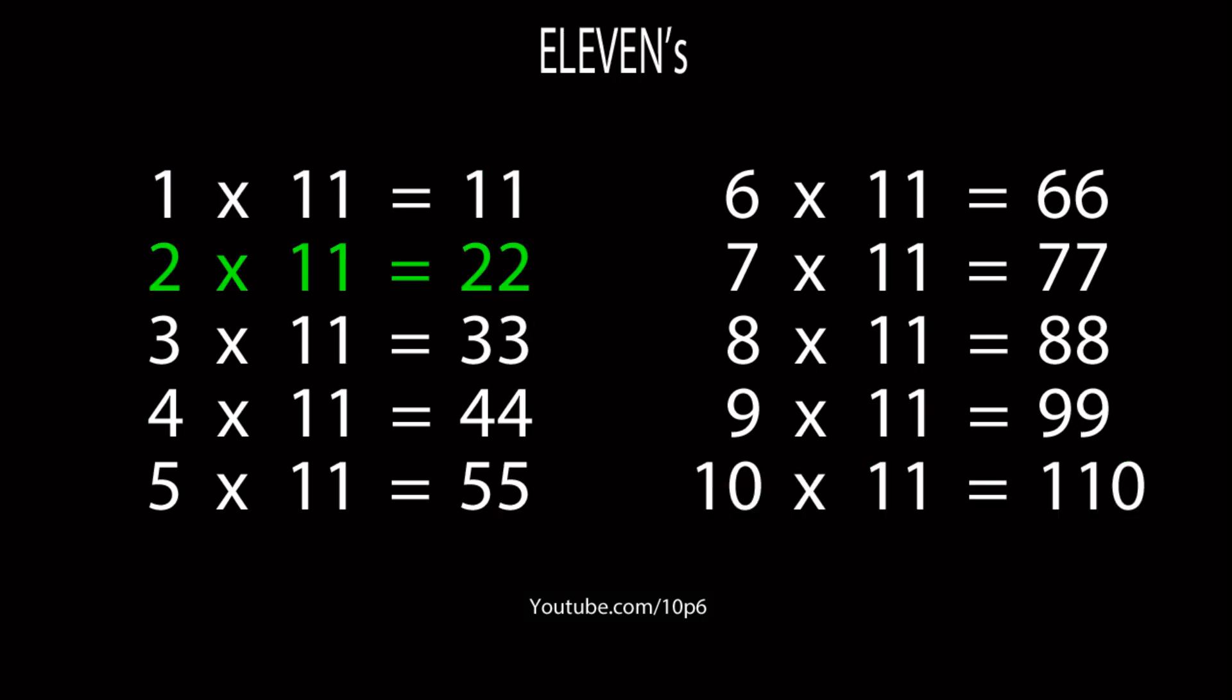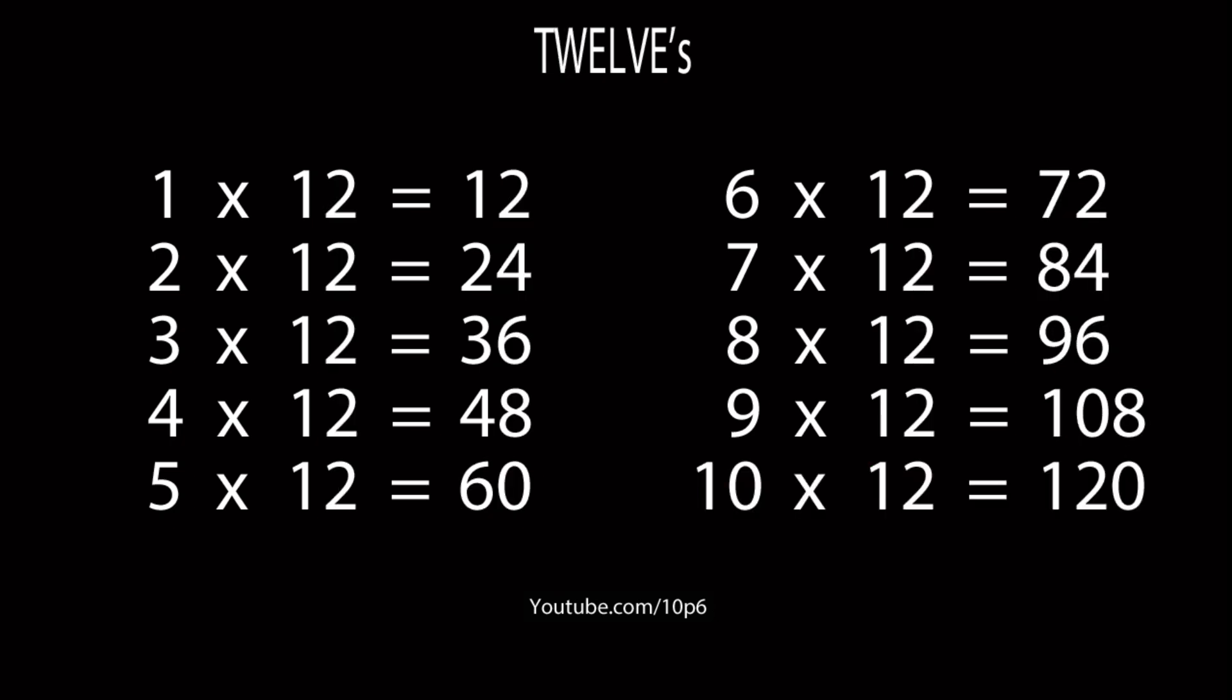11s. 1 11 is 11, 2 11s are 22, 3 11s are 33, 4 11s are 44, 5 11s are 55, 6 11s are 66, 7 11s are 77, 8 11s are 88, 9 11s are 99, and 10 11s are 110. And finally 12s.